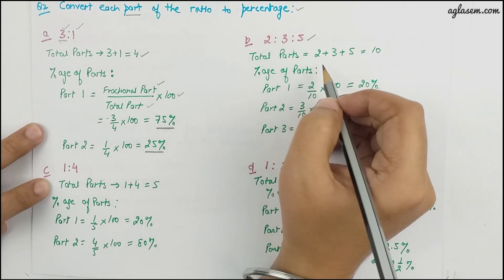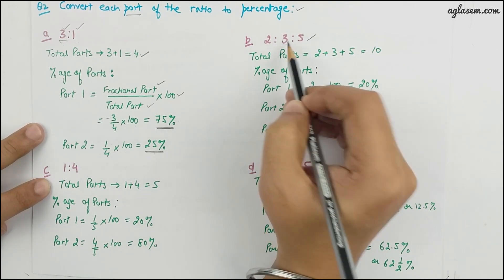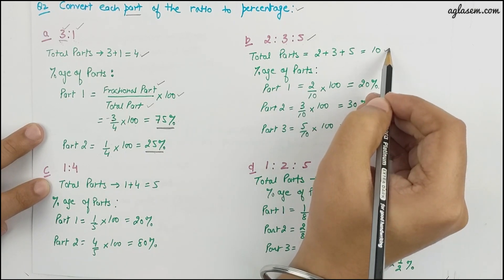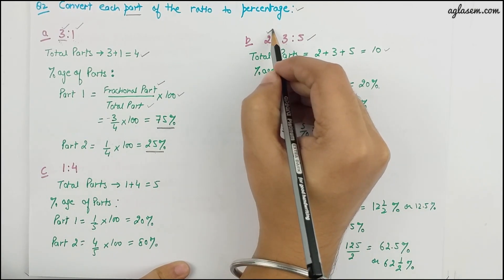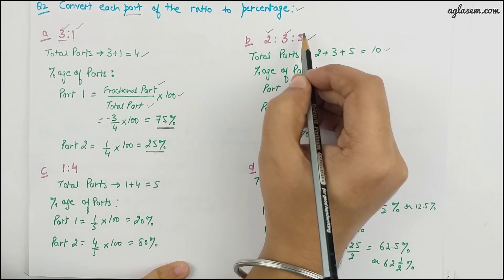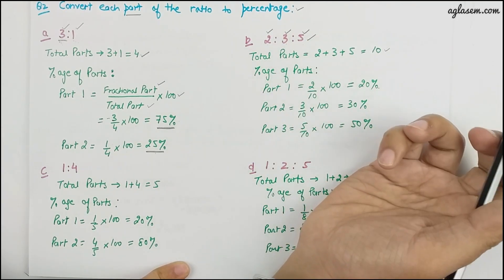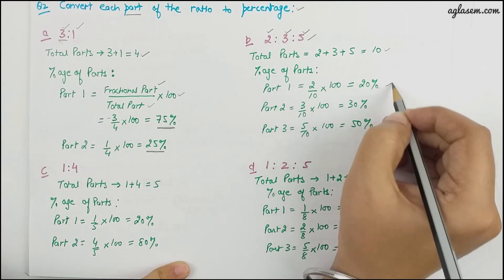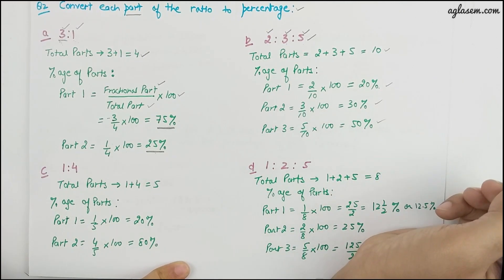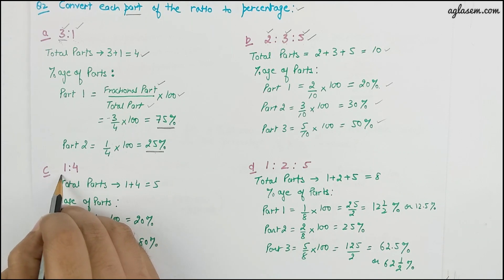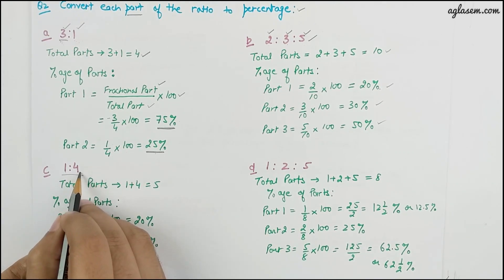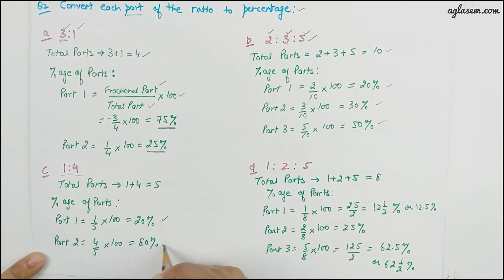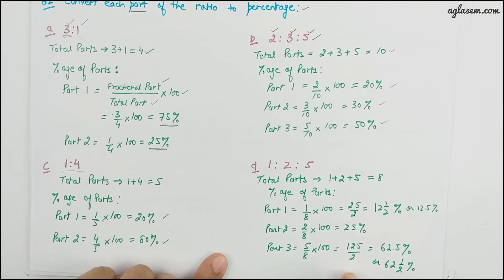For ratio 2:3:5, the total parts are 2 plus 3 plus 5, which is 10. Part one: 2 divided by 10 into 100; part two: 3 divided by 10 into 100; part three: 5 divided by 10 into 100. For ratio 1:4, total parts are 5, giving percentages of 20 percent and 80 percent respectively.